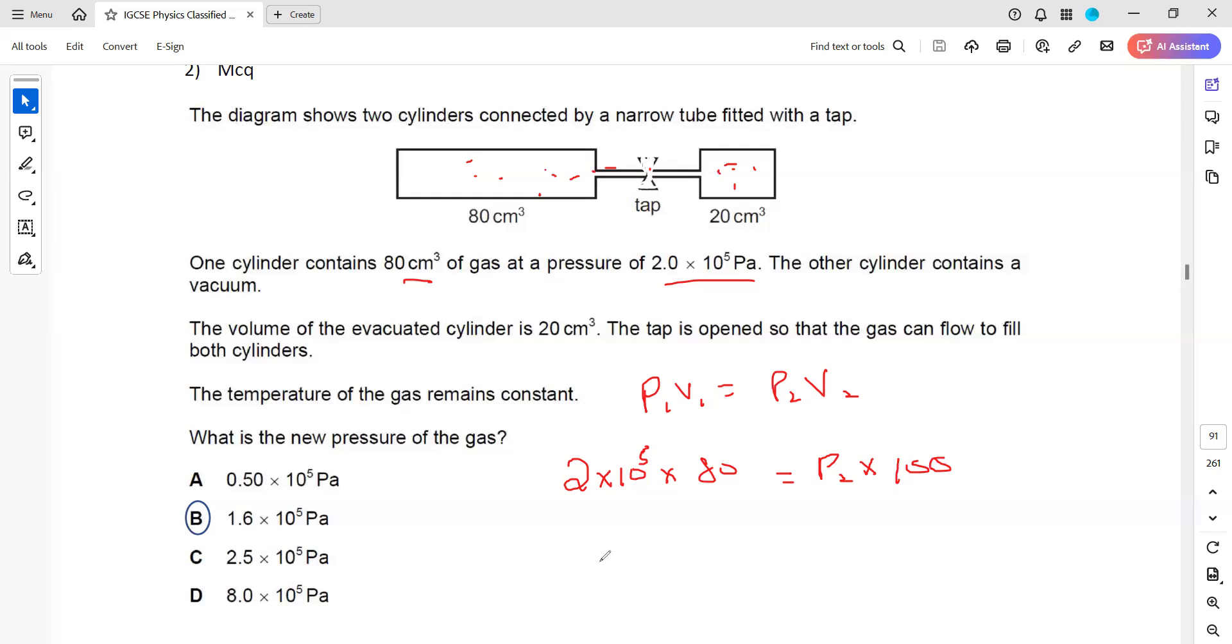Then we just simplify: 2 × 10⁵ times 80 divided by 100. So when we simplify, this will match with option B. So B will be the right answer. Is it clear this question? Any doubt in this?